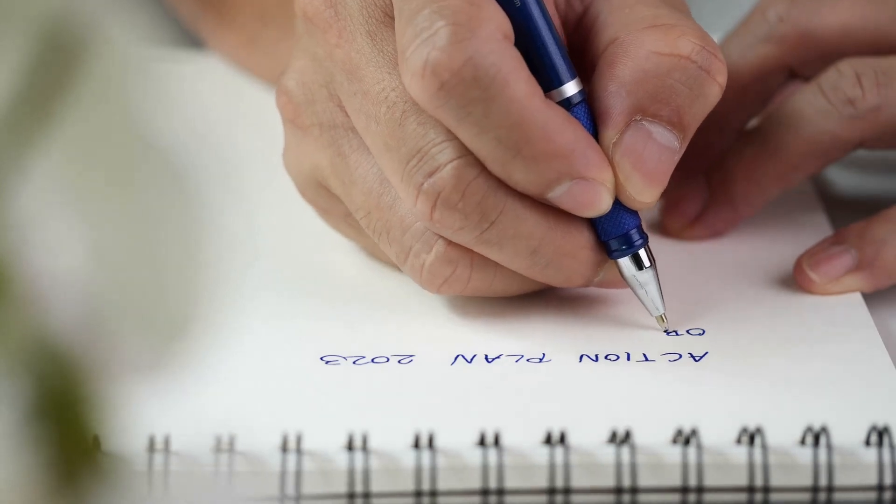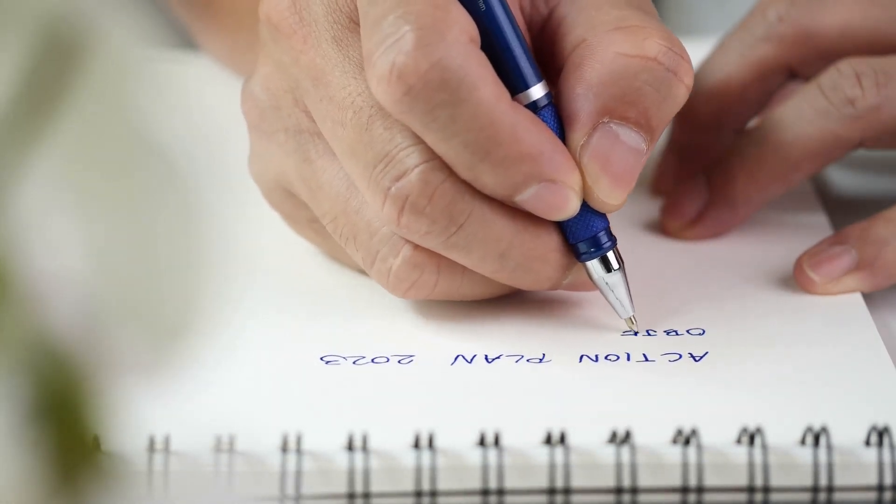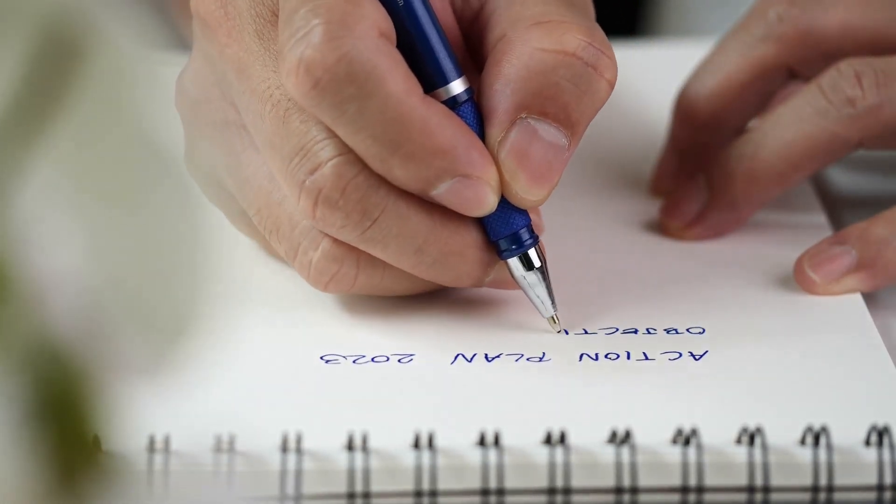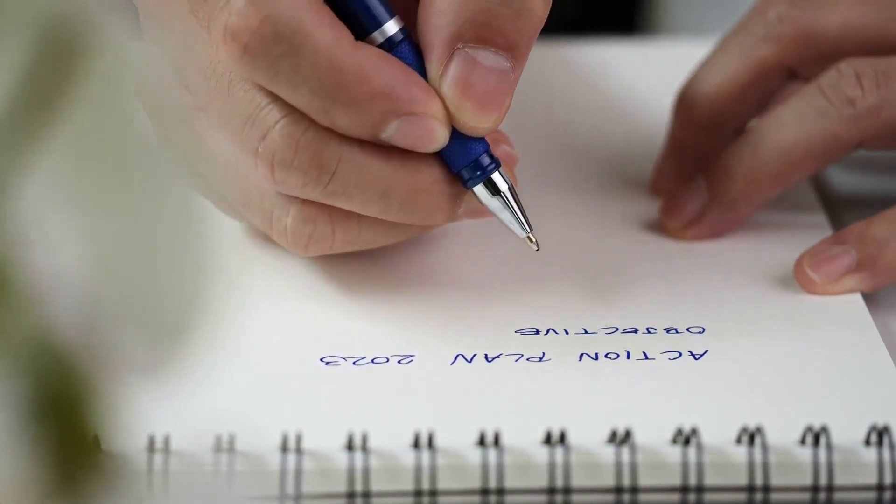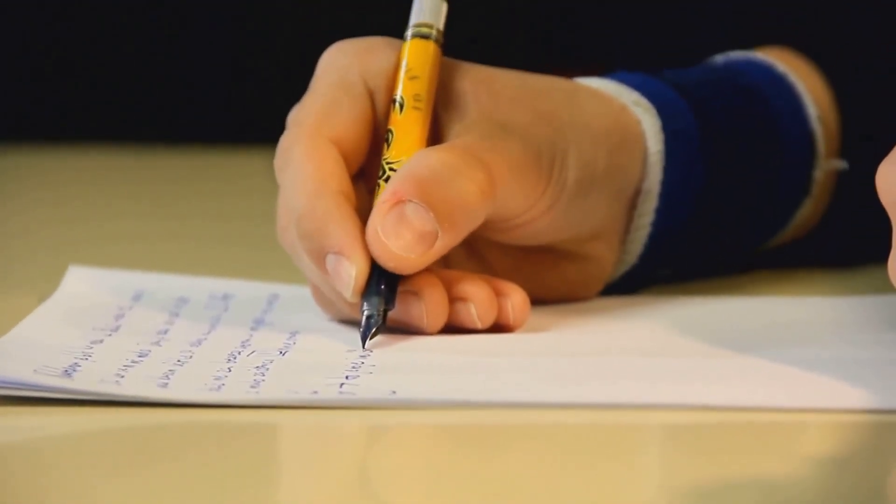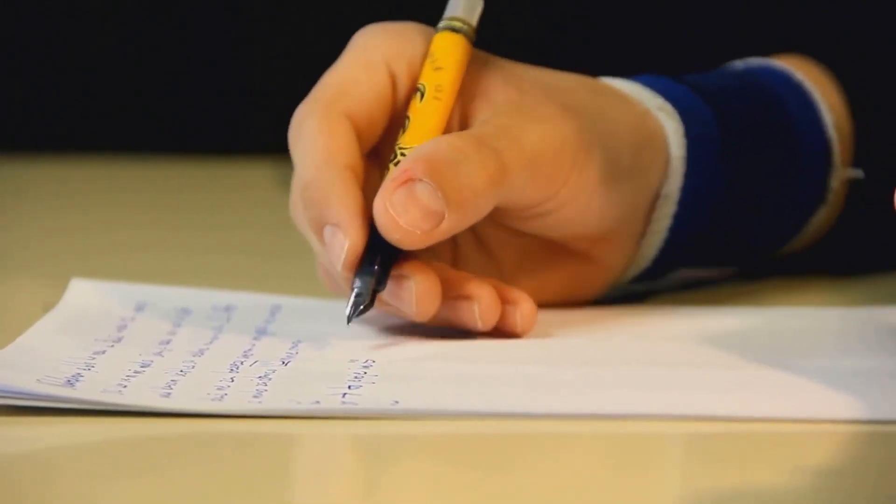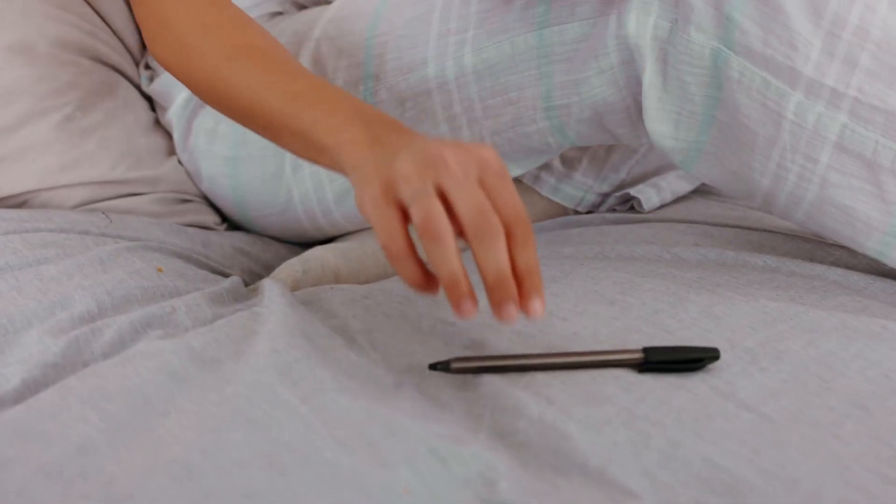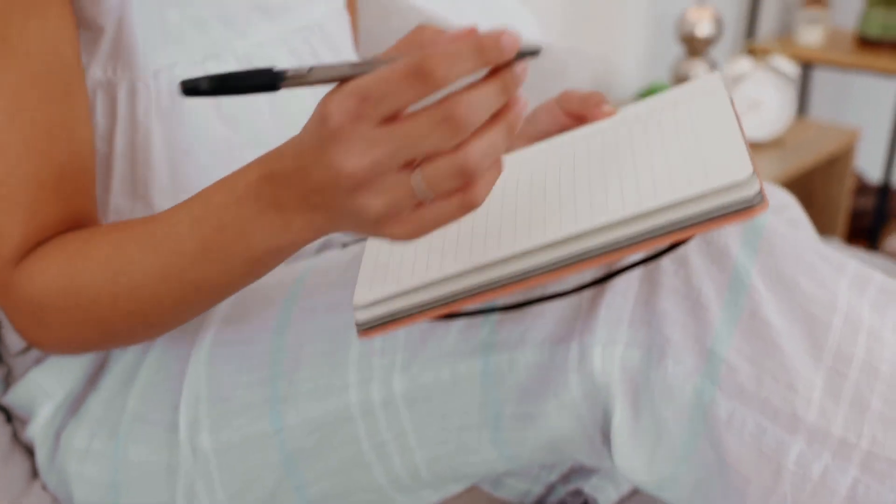First things first, identify your central idea. This is the heart of your mind map, the very core of your thoughts. Think of it as the seed from which the rest of your mind map will grow. It could be anything: a problem you're trying to solve, a concept you're trying to understand, or a project you're planning. Write it down in the center of your page.